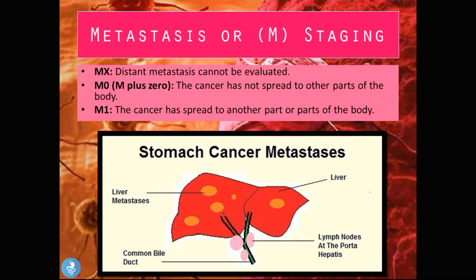Distant metastasis in gastric tumors most frequently occurs in the liver because blood from the stomach travels to the liver via the portahepatic system, so that nutrients absorbed from the stomach can be distributed by the liver throughout the body. Because of this, the liver tends to suffer greatly in gastric cancer.